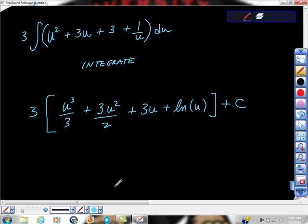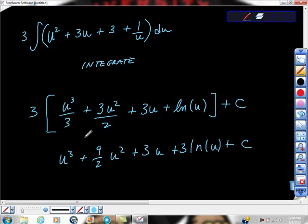Everybody following the steps? The steps are okay, aren't they? Good. I'm going to go ahead and distribute all this in. So we'll get u cubed plus 9 halves u squared plus 3u plus ln. Did I miss something? Oh, 3ln. Thank you. Is that right? And this is 9? Holy mackerel.